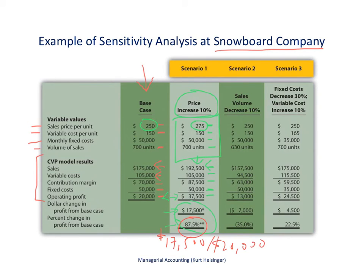So that gives us 87.5%. What that means is: if we increase the price by 10%, our profit would go up by 87.5% — a huge increase in profit relative to the increase in sales price. Some would say this means our profit is very sensitive to changes in sales price, and they would be right.